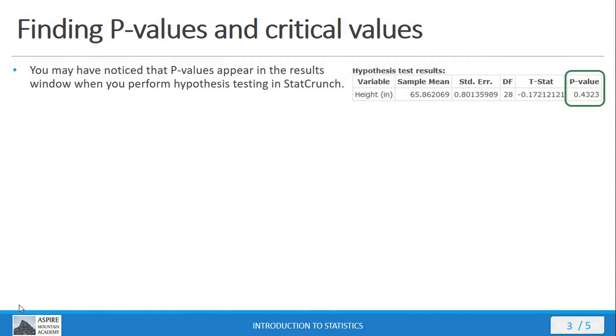Okay, so, you may have noticed there in the video that we saw p-values there on the end of that results table that we found there in StatCrunch. So, if you have actual data for your sample or you have summary stats, you can use this procedure that we just looked at to get your p-values out. What happens, however, if you don't have that?